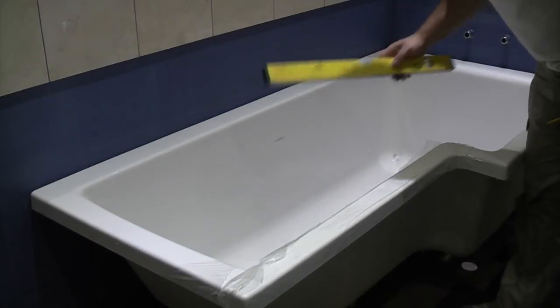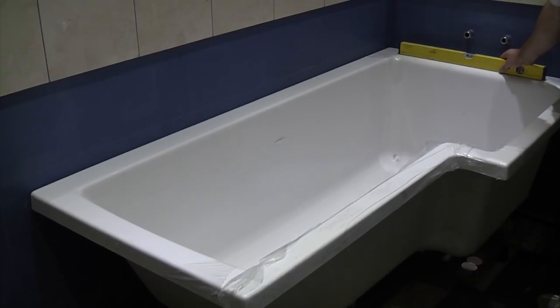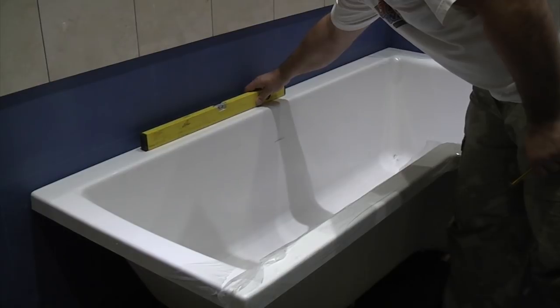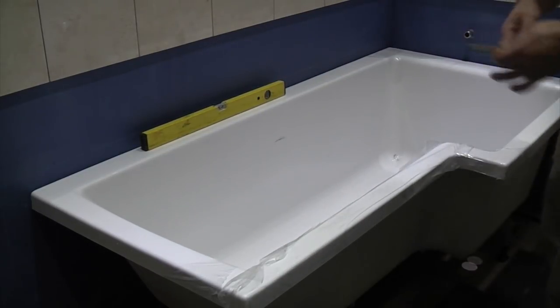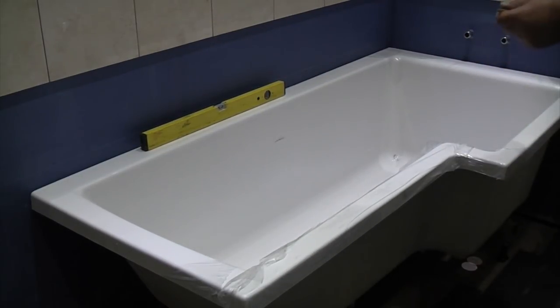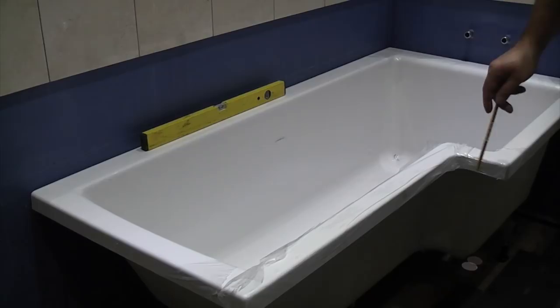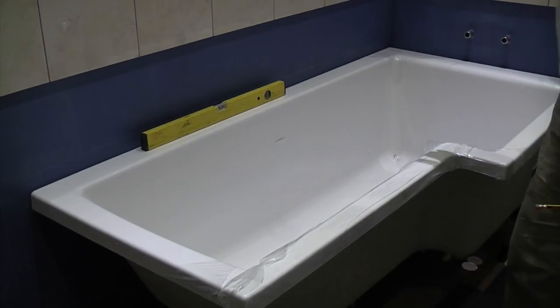We have leveled the bath. It is perfectly level that way, and it is perfectly level that way. When you do this, you've got to keep checking that all your feet are touching the floor. Because it's four feet, it's extremely difficult getting it leveled. Once you have got it leveled, you can then lock up your lock nuts on your feet so that your feet do not actually move. Now we have got that bath exactly where we want it.